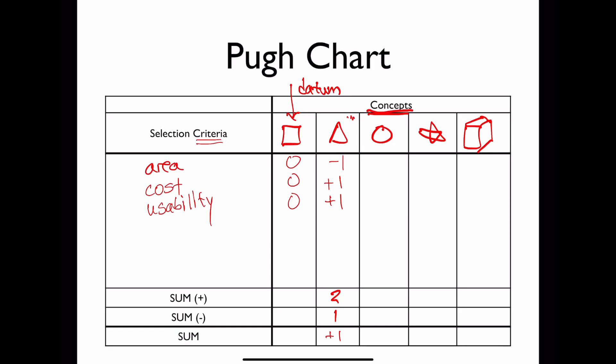And so once we've evaluated this concept, we can say that the triangle has two positive aspects and one negative aspect for a total score of plus one. Now, let's say we come here to the circle, and we say, this is much more efficient for area, it's better for cost, and it's way more usable in the things that we want to do. And so our circle concept gets a score of three, and it has no negative aspects to it, so it has a three positive score. And if we go on and on, we would evaluate each of these concepts relative to the datum, and we would come up with a set of rankings.